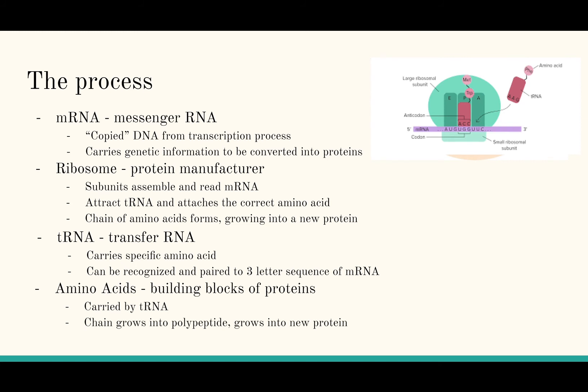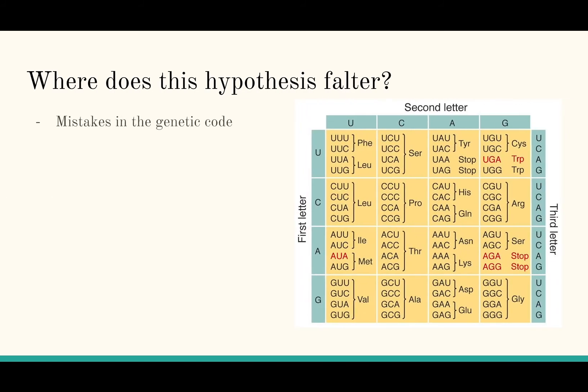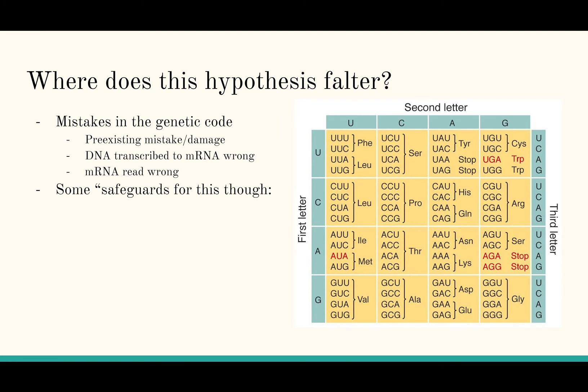Amino acids are the building blocks of proteins that are carried to the ribosome by the tRNA. They make up polypeptides which grow to become proteins. There are mistakes that can be made in this process, though. If there happens to be an alteration in the genetic code, such as an improper crossing over or damage to the DNA by an outside factor, the resulting mRNA will change.